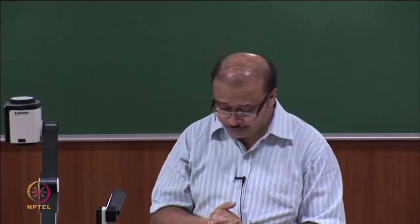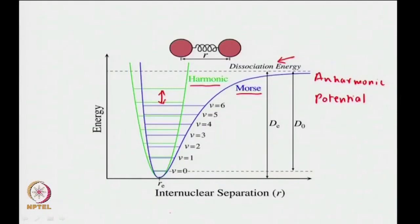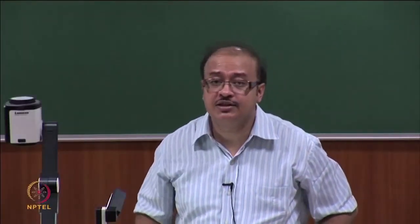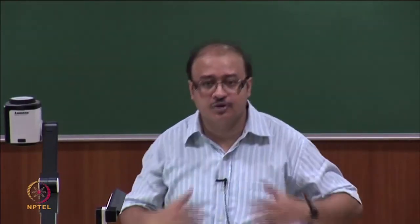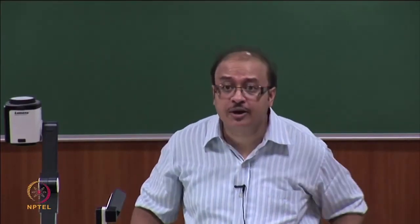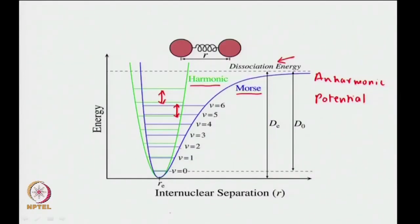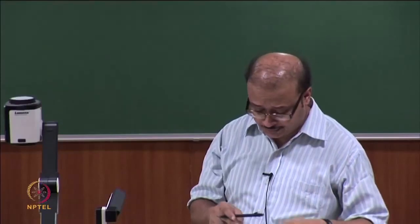For the harmonic potential, the energy levels are all equispaced. For the anharmonic potential, shown in blue, the gap between energy levels decreases as you go up. Once you reach the dissociation energy, the gap is really small because when the bond dissociates, you are almost in a continuum of energy levels — there is almost no quantization because the particle is free.